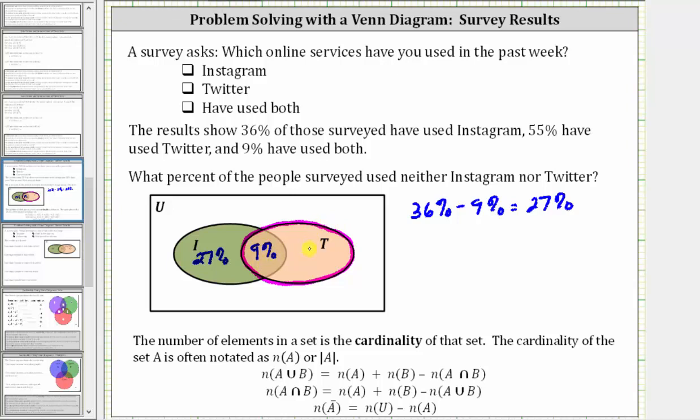Therefore we can find the percent that only use Twitter by taking 55% and subtracting 9%. So 55% minus 9% is equal to 46%. So of the Twitter users, 46% only use Twitter and 9% also use Instagram.